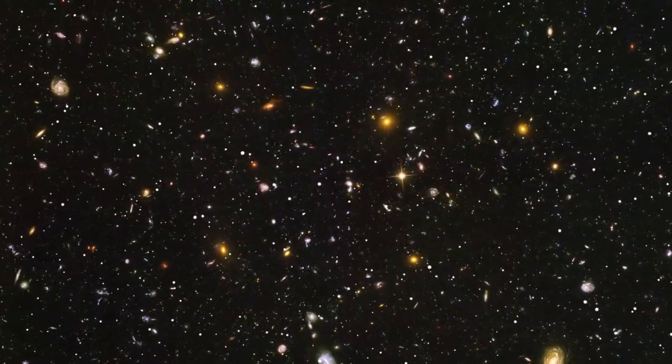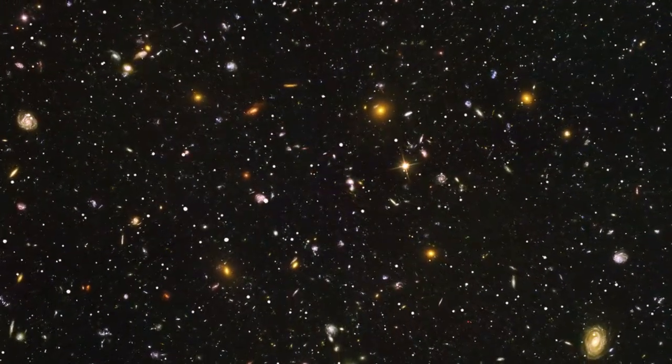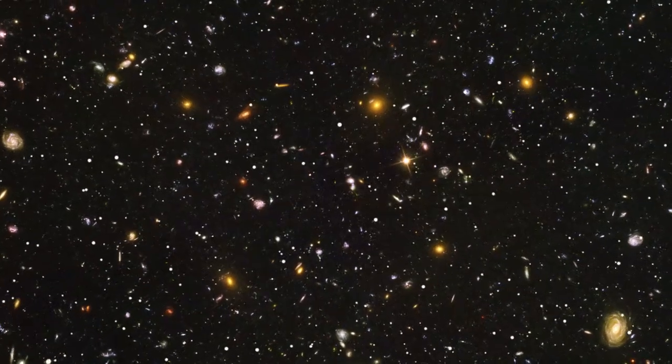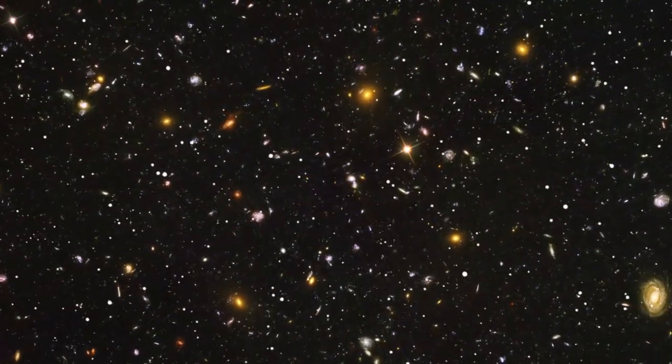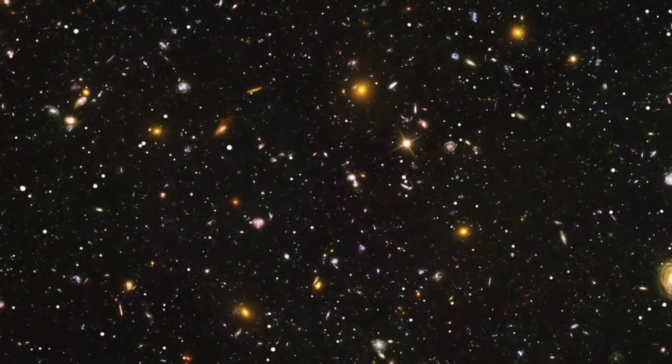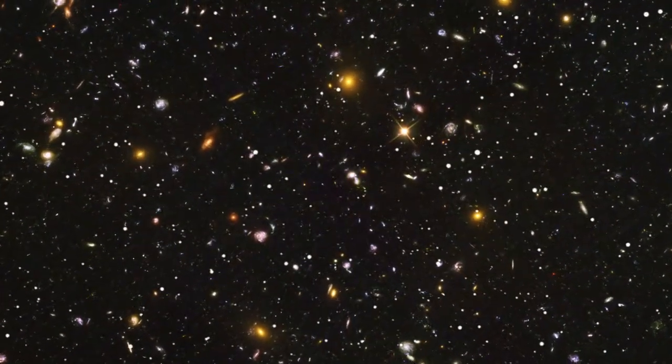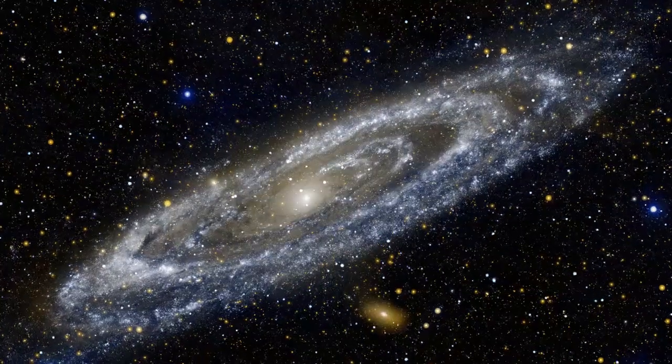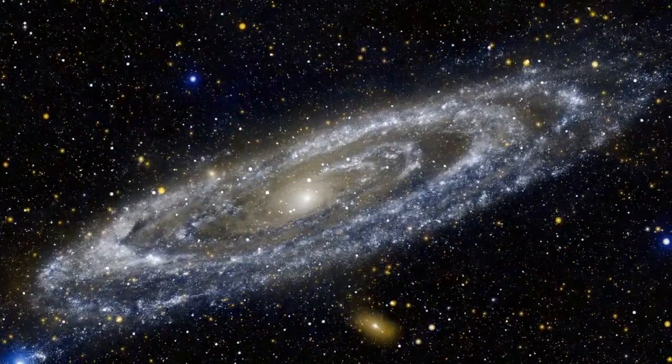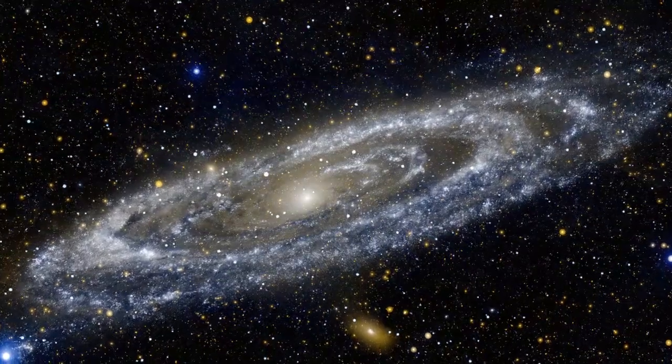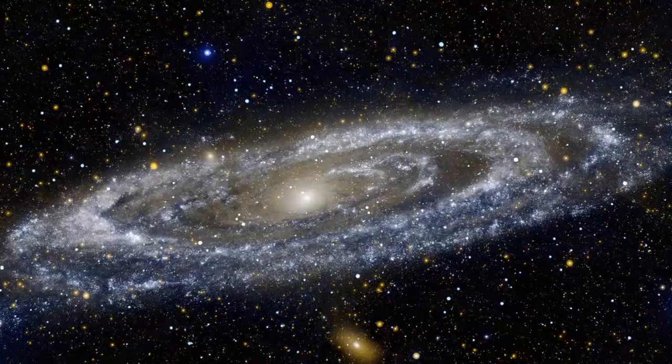The James Webb Space Telescope JWST has already made headlines with its stunning images and groundbreaking observations, but nothing has captivated the scientific community quite like its deep field images. These snapshots allow us to peer farther back in time than ever before, capturing galaxies as they appeared billions of years ago. The JWST's infrared capabilities enable it to see through cosmic dust, revealing the structure and formation of some of the earliest galaxies.